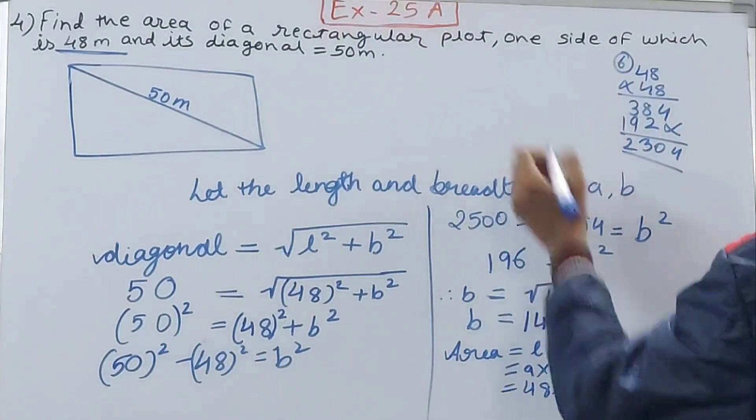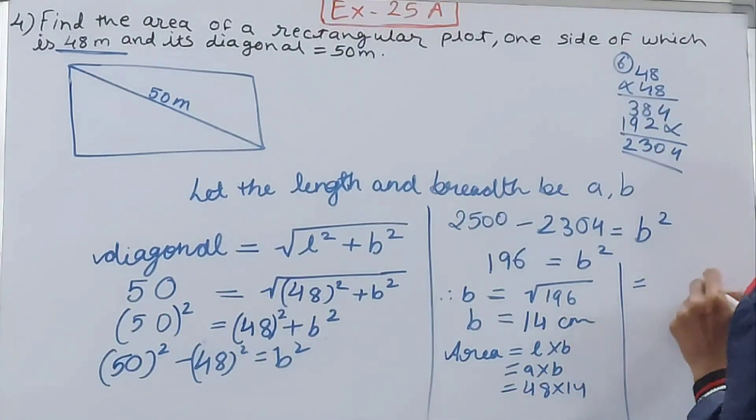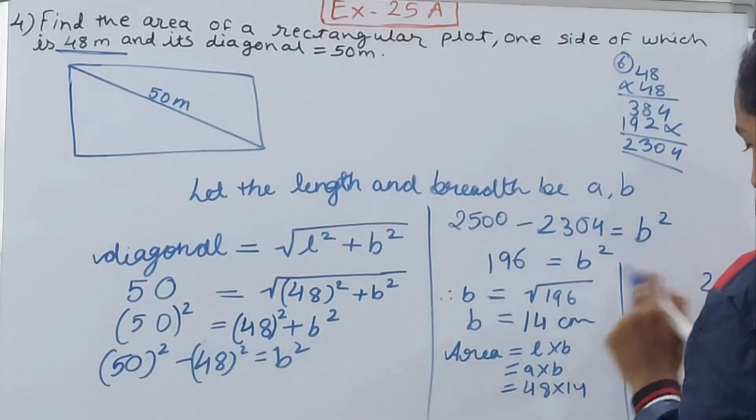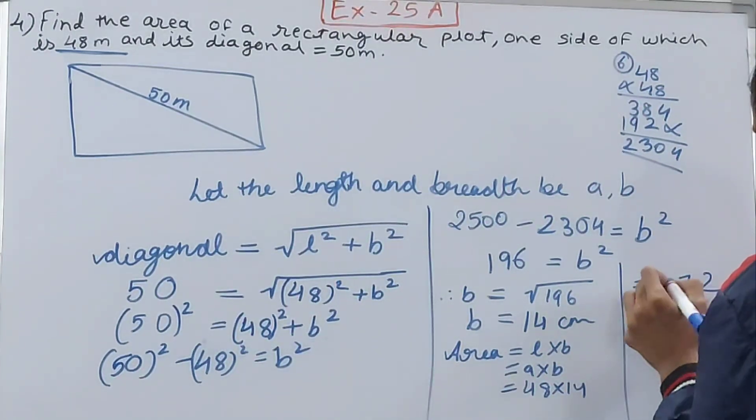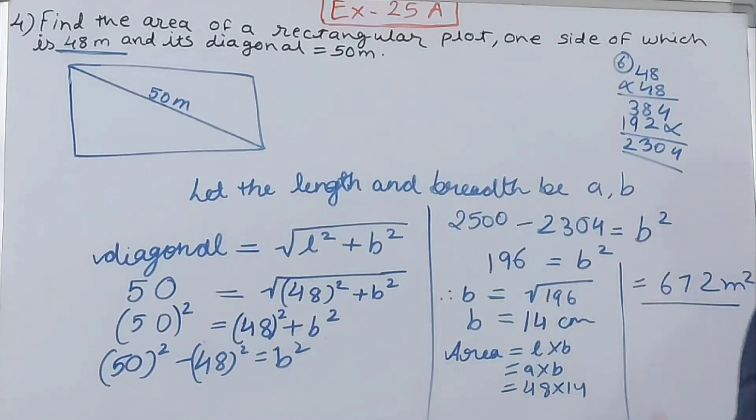Into 14. So this will be, 14 into 8 becomes 112, 11, 14 times 4 is 4, 56 and 11, that is 67, 672 square meters. That is your area.